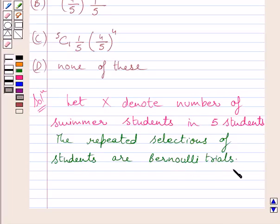We know Bernoulli trials are finite in number. They are independent, they have exactly 2 outcomes—success or failure—and probability of success remains the same in each trial. Since the event of selecting a student is independent and the number of trials is definite, that is 5, the repeated selection of students are Bernoulli trials.